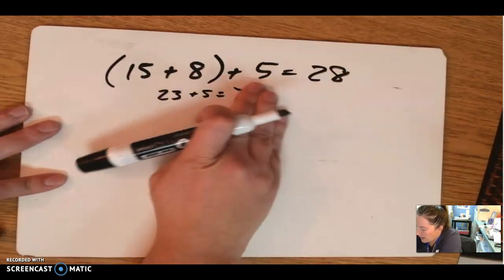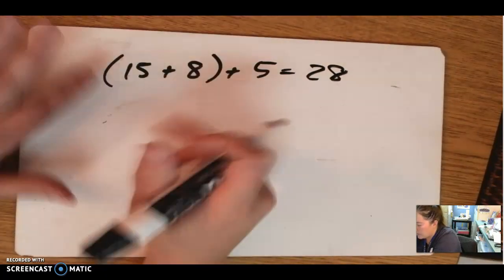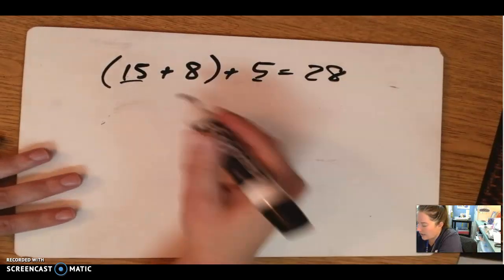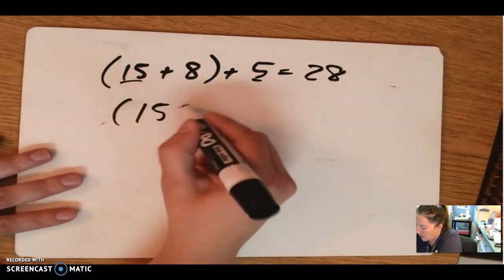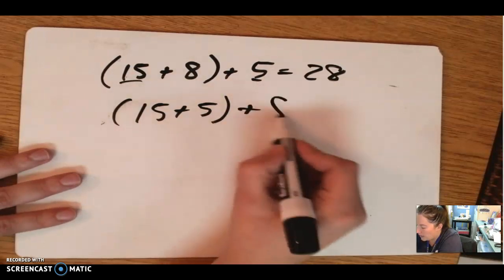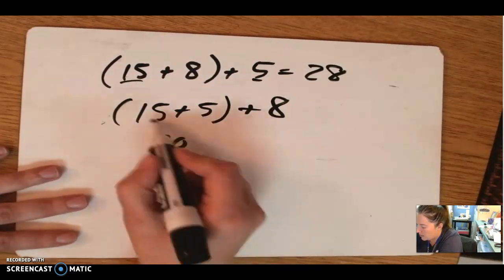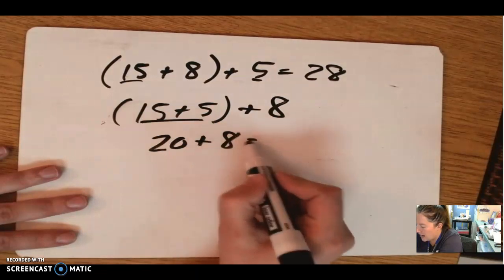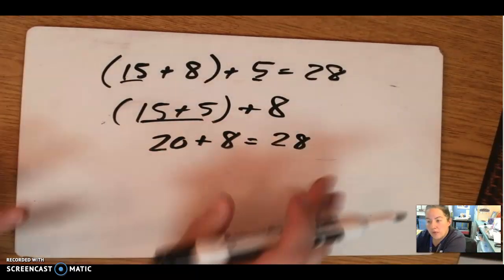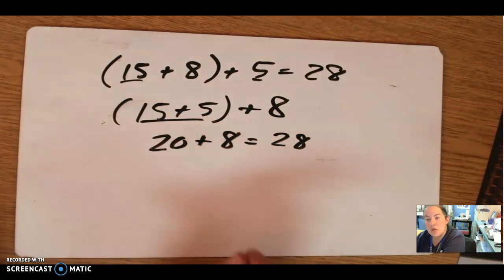Instead of doing it that way, I'm going to move these around a little bit to make it easier. So I notice that 15 and 5 I know can go together. 15 and 5 I know is 20, so then I have 8. So now it's real simple. It's just 20 plus 8, and I know the answer is 28.